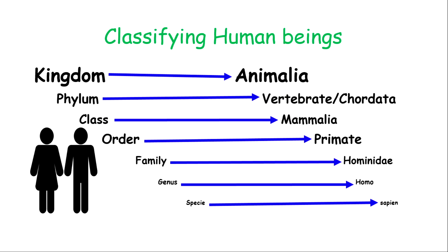We then move on to the genus, and we belong to the genus Homo. The word homo in Latin literally means man, so only man will be in the genus Homo. The final group that separates us totally from all other primates or mammals is that we are Sapiens. Human beings are Sapiens, and sapien in Latin literally means wise man. We have a level of intelligence that separates us from other organisms in the genus Homo or in the family Hominidae. That is how we classify an organism like ourselves — from a large group down to a very specific group.